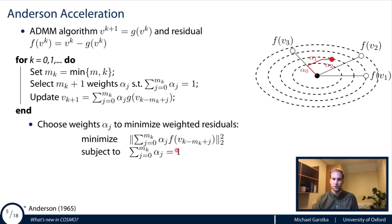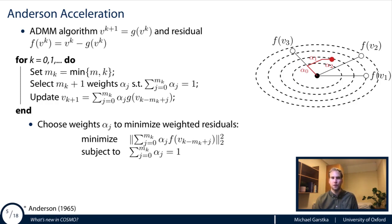You recombine the outputs of the ADMM algorithm using these weights to get the next iterate. Anderson suggested minimizing the weighted sum of previous residuals subject to the constraint that it's an affine combination. Consider the last three residual vectors — you want to find the alphas to combine those vectors to create a new vector close to zero. In practice this works really well for many first-order optimization algorithms, but you cannot get convergence guarantees and may run into numerical problems.